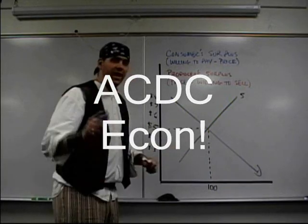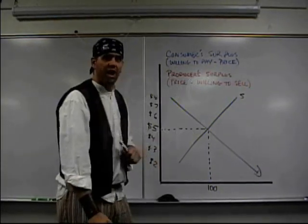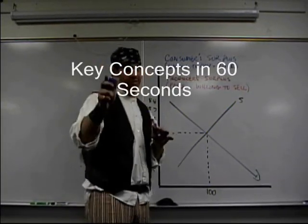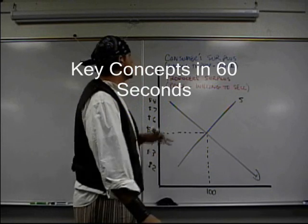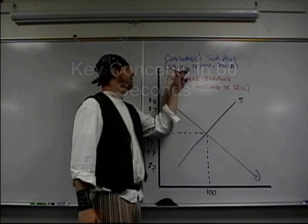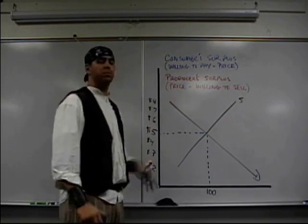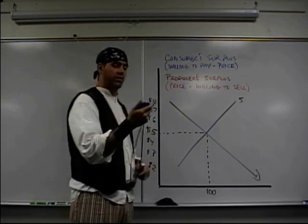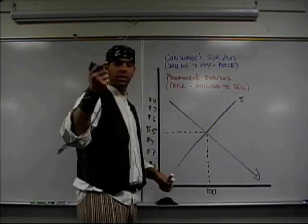This is Mr. Clifford with ACDC Econ, Key Concepts in 60 Seconds. Today we're going to talk about consumer and producer surplus and show you where it is on the graph. Here we go.